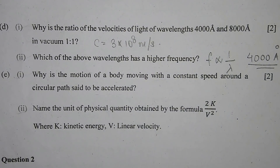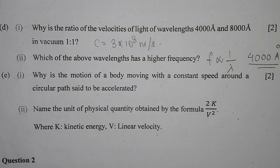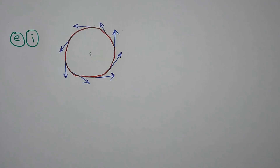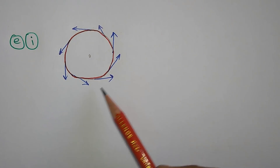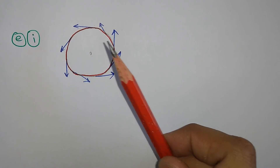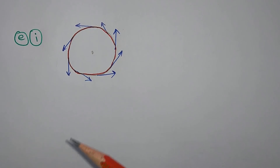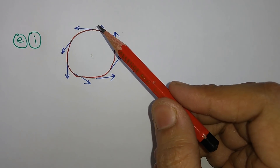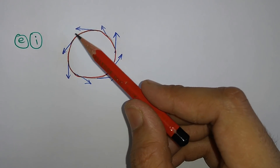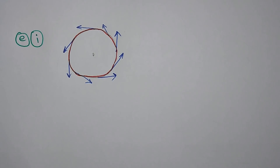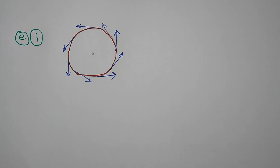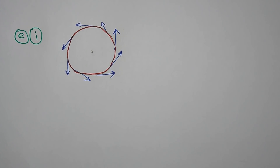Part E, number 1: Why is the motion of a body moving with a constant speed around a circular path said to be accelerated? The speed may be constant, but the velocity will not be constant, because the direction of the body keeps on changing when in circular motion — the direction is taken according to the tangent. Therefore, the velocity will be variable. If the velocity is variable, then the acceleration will be variable. Hence, a body moving with constant speed around a circular path is said to be accelerated.